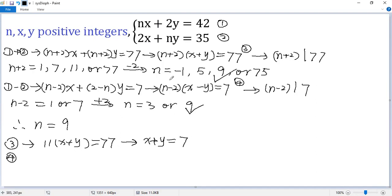From 4, n minus 2, so 9 minus 2 is 7. So we get 7 times x minus y equals 7. So both sides divided by 7. So we get x minus y equals 1.